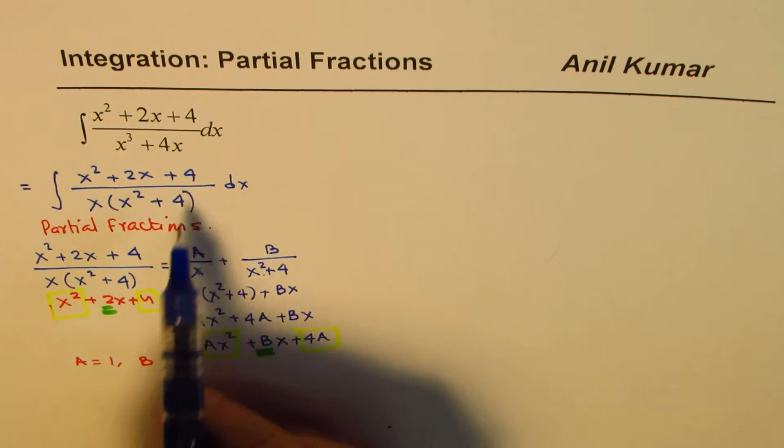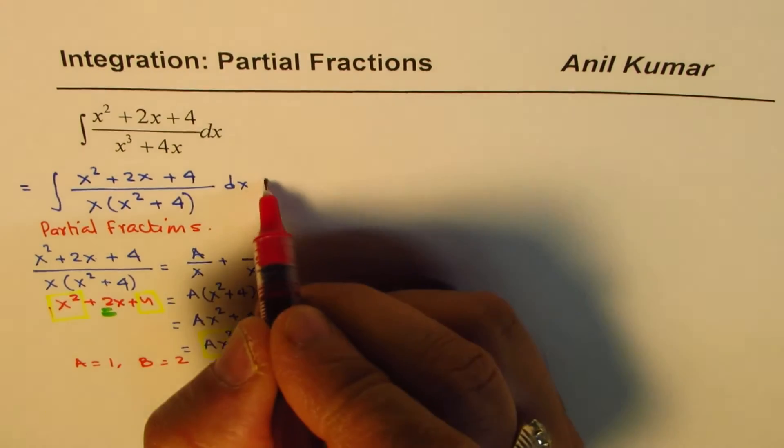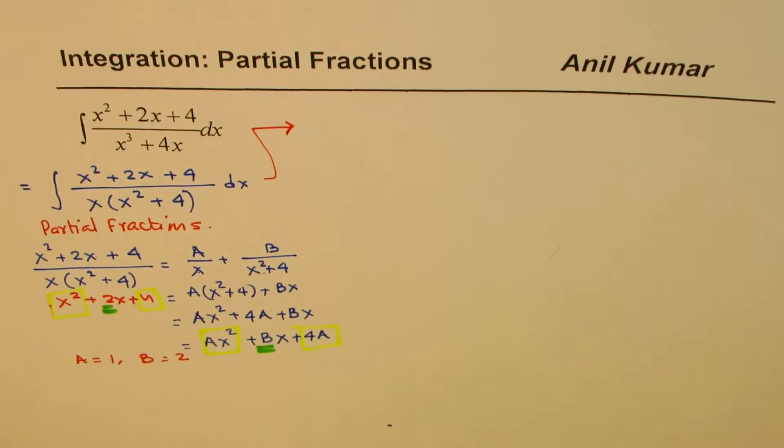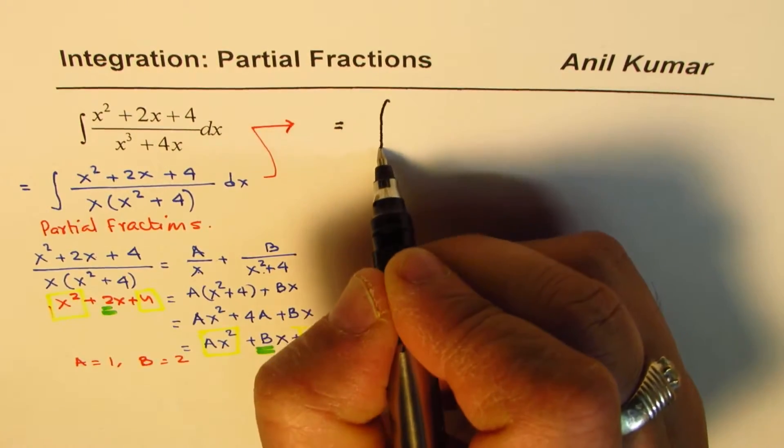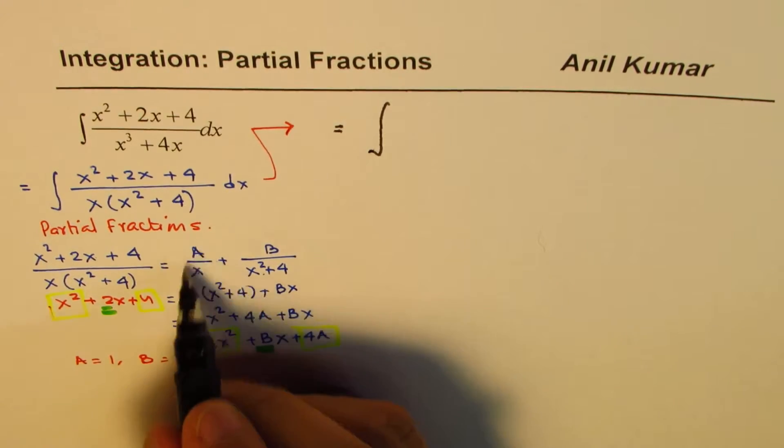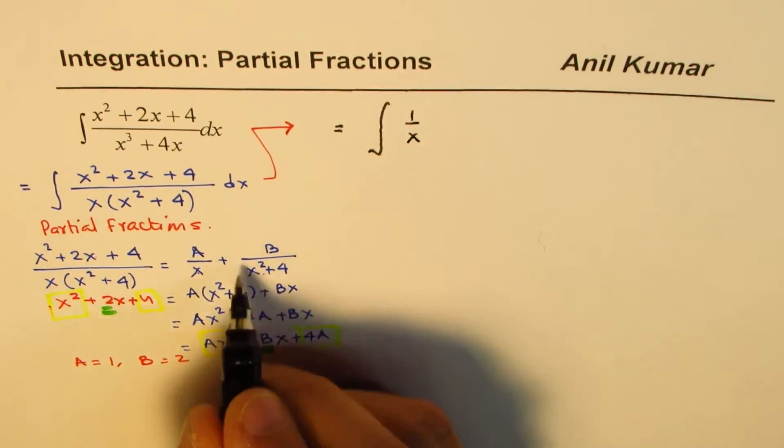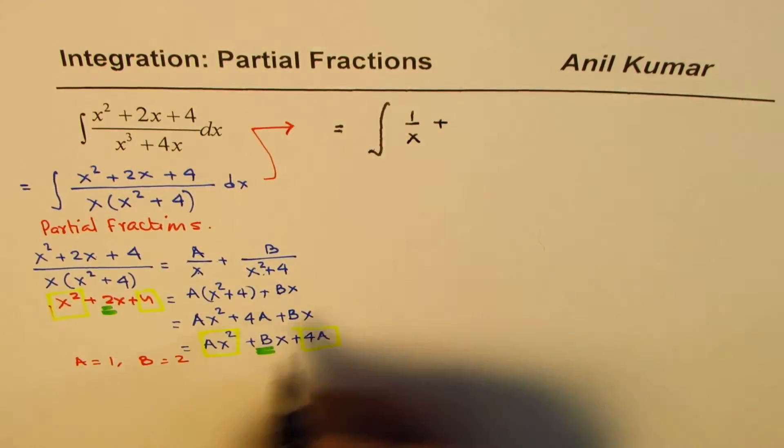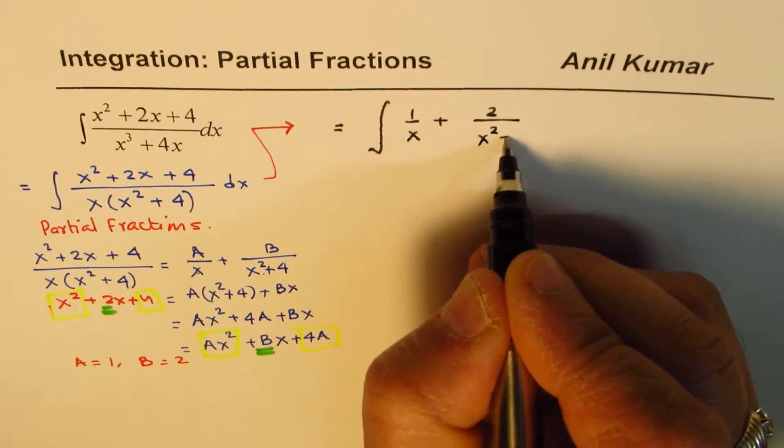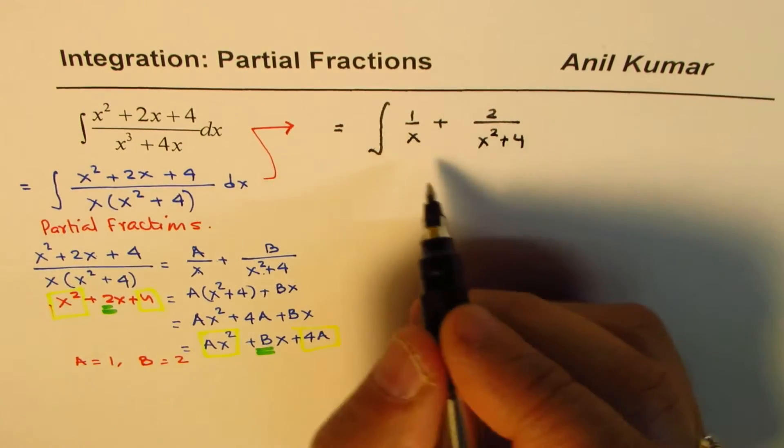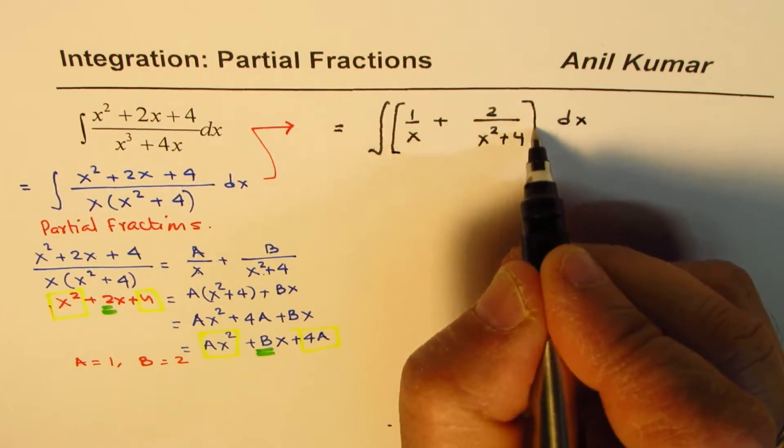So that means the whole thing could now be written as, so let's go back to this part. So we could write this integral as equal to integral of a is 1, this is what we have, 1 over x plus b is 2, so it is 2 over x squared plus 4. So it is all this dx.